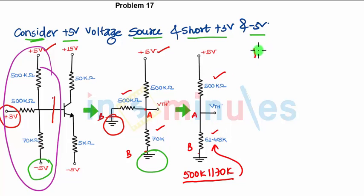When you apply KVL, it will be R2 upon R1 plus R2 times 5 volts. Now, R2 is nothing but 61.403 upon 61.403 plus 500.